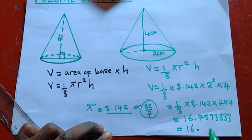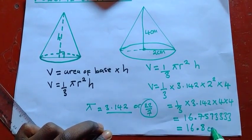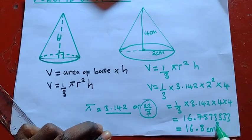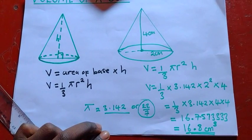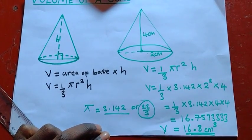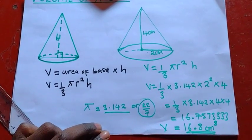So from here, we'll leave our answer correct to 3 significant figures. So it will be 16 point. So this 7 will be rounded off by 5. So it will be 8, okay? So the unit's centimeter, don't forget to put a cubed there because this is volume. So the final answer there, volume is equal to 16.8 centimeters cubed, okay?